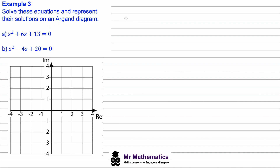For question a, we have z squared plus 6z plus 13 equals zero. To solve this quadratic, we're going to use the method of completing the square. The 6 gives us 3, and we complete the square by taking away the 9, then adding back in the 13, which equals zero.